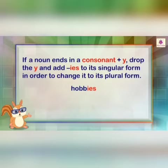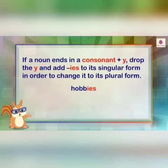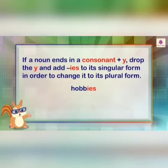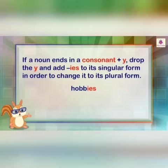If there is a noun that ends with a consonant and also a Y — it ends with Y — then what do we do to create a plural form? We replace Y with IES. For example, hobby: we take away Y and put IES, so the plural form becomes hobbies.